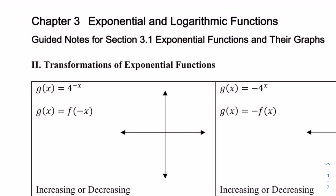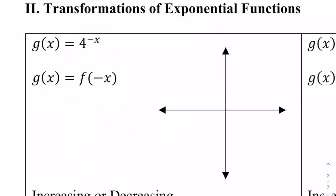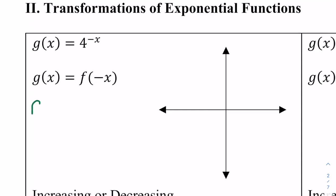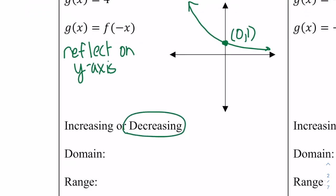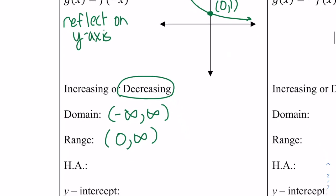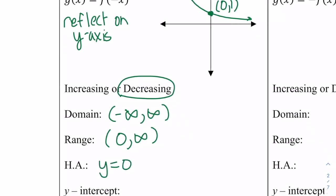Now let's consider some transformations. The first one is 4 to the negative x, which we can consider as f of negative x. Remember, this is going to be a reflection on the y-axis. So initially the function was increasing; now it's going to be decreasing. The y-intercept is still (0, 1). The domain doesn't change — it's still negative infinity to infinity. The range is still 0 to infinity. The horizontal asymptote is still y equals 0, and there are still no x-intercepts.